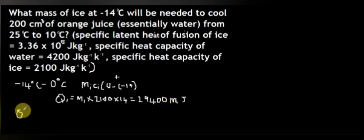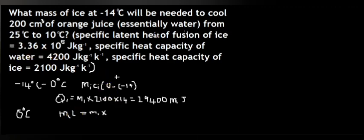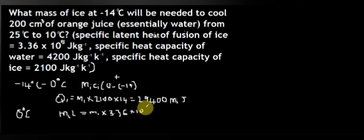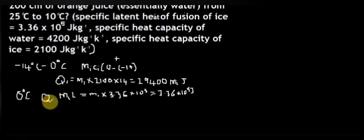The heat gained when the ice melts at zero degrees centigrade is equal to the mass of ice times the specific latent heat of ice. So Q2 equals mᵢ × L, where the specific latent heat of fusion is 3.36 × 10⁵ joules per kilogram.